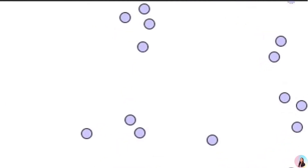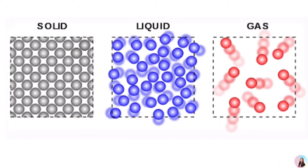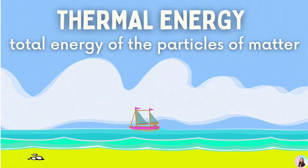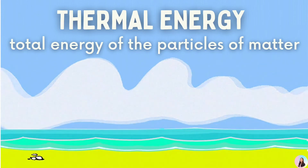Particles in matter are constantly moving. In solids, they move back and forth. In liquids, they slide and pass one another. While in gases, particles move rapidly in all directions. These particles in matter exhibit both kinetic and potential energy. The total energy of the particles of matter is called as the thermal energy.